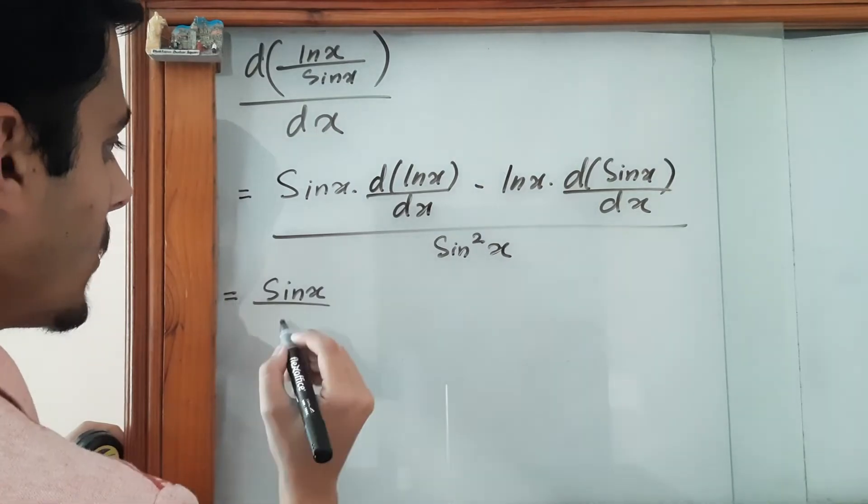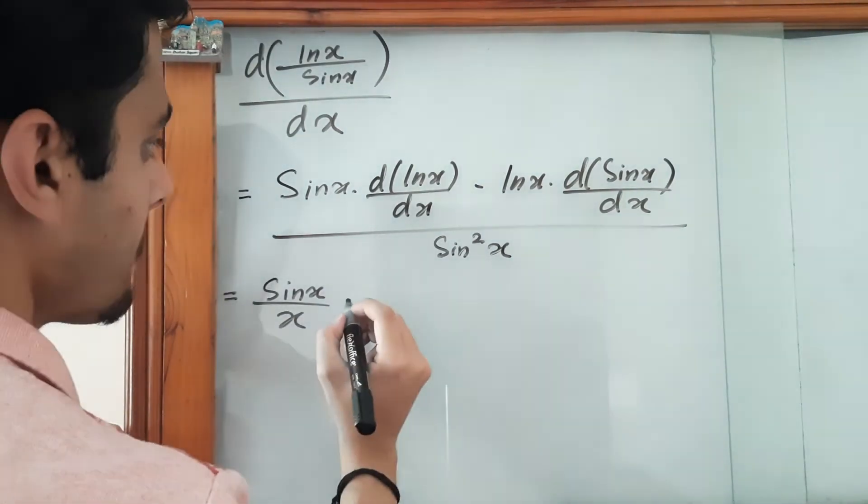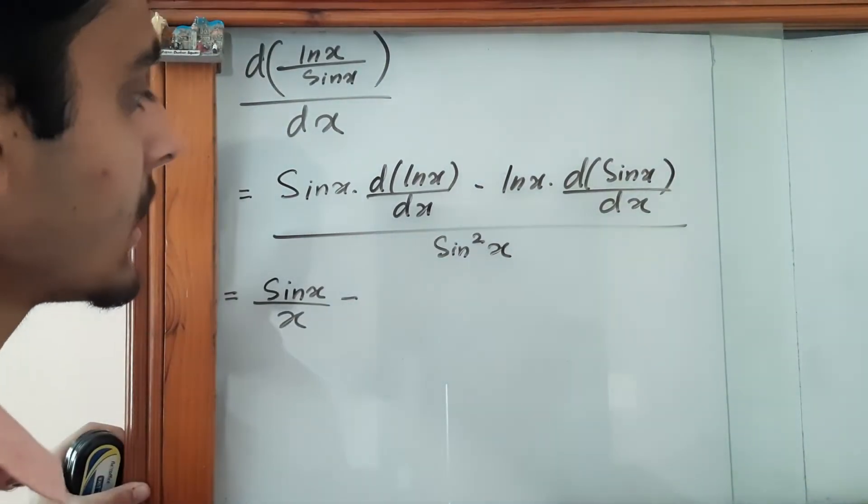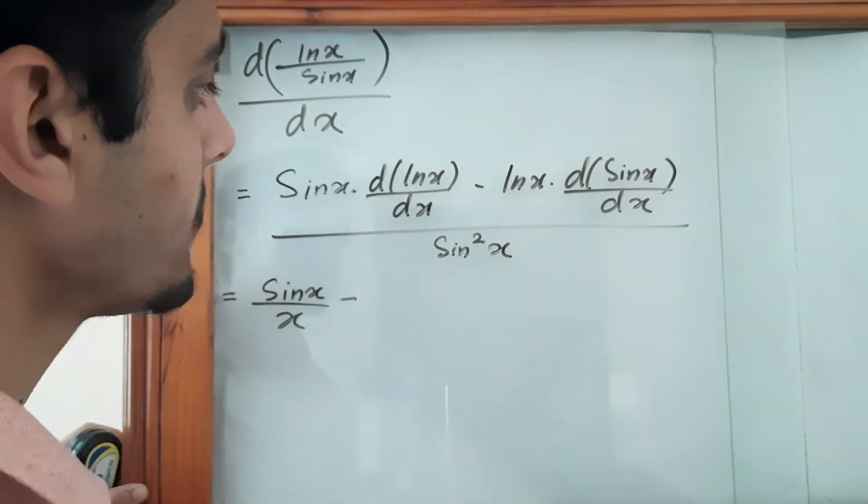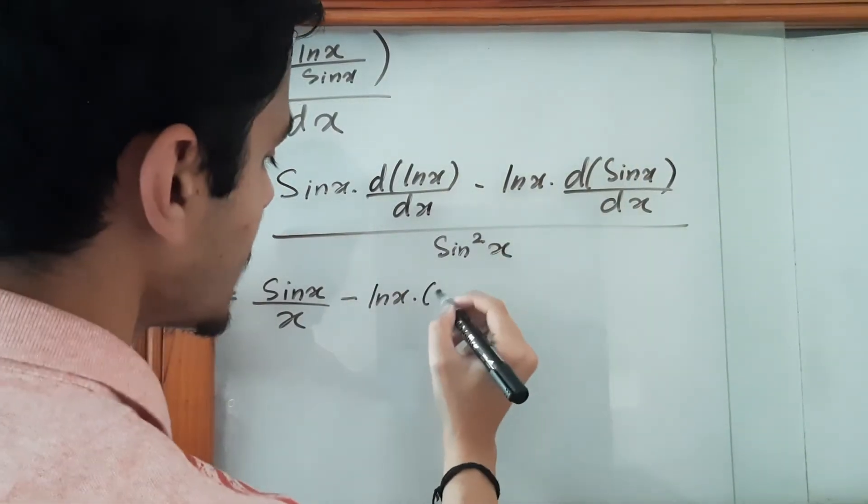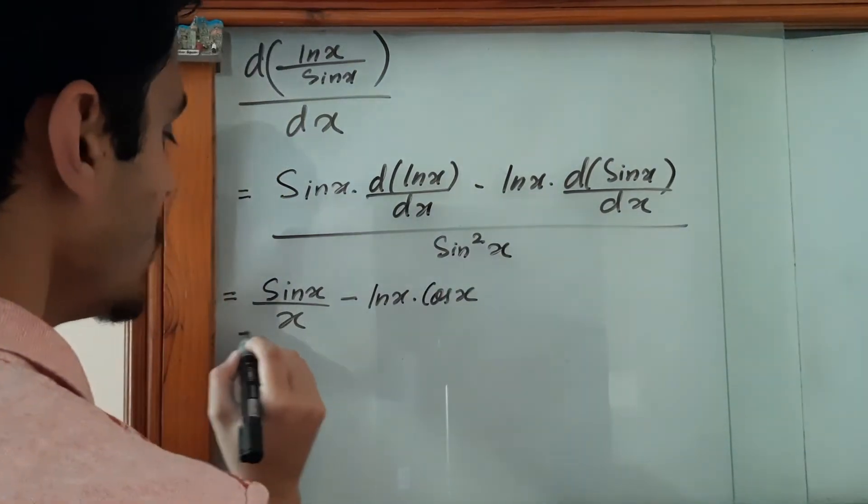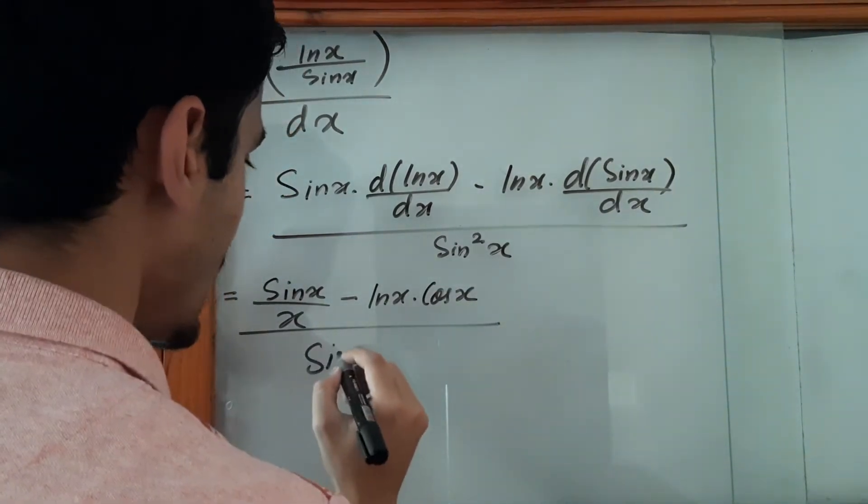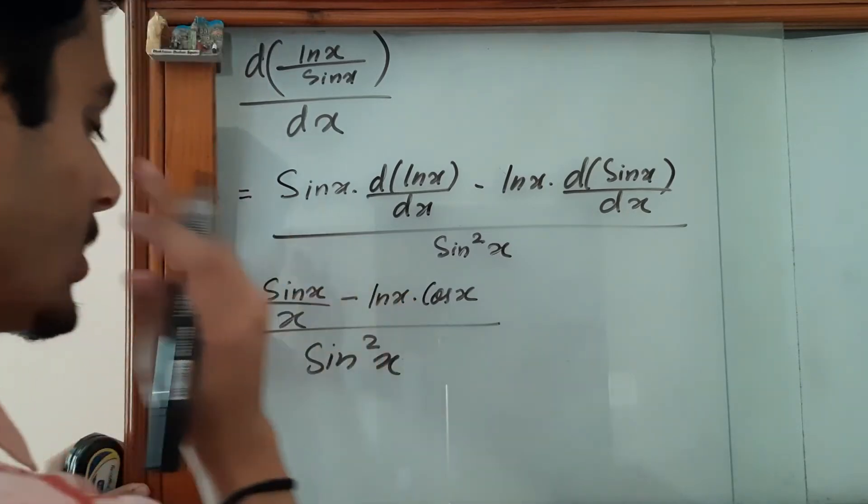So it is sin(x)/x minus ln(x) times cos(x), the whole thing divided by sin²(x).